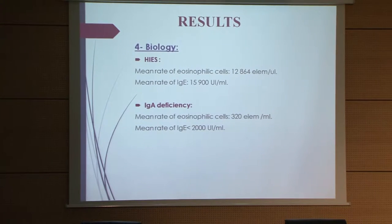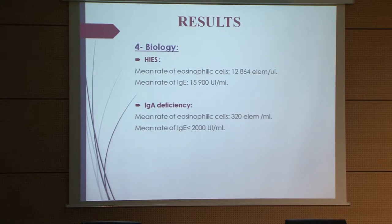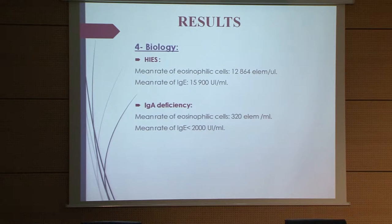Our blood analysis showed a mean eosinophil count of 12,864 and a mean IgE rate of 15,900. Regarding IgA deficiency specifically, the mean eosinophil count was 320 elements and the mean IgA rate was less than 2,000 units per milliliter.